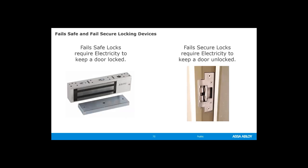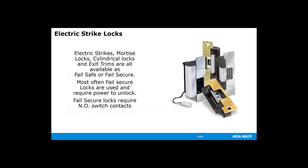Now we're going to take a moment to talk about locking devices. Basically, there are two types of electronic locking devices: fail-safe and fail-secure. The difference being that a fail-safe lock requires electricity to lock the door, while a fail-secure lock requires electricity to unlock the door. Fail-safe and fail-secure specify the door status. Electronic strikes, mortise locks, cylindrical locks, and exit devices are all available as fail-safe or fail-secure.